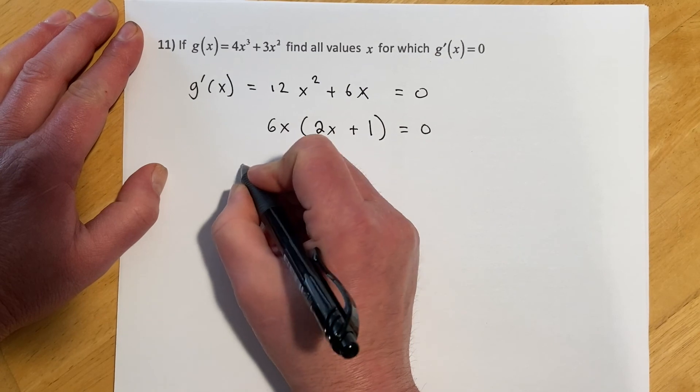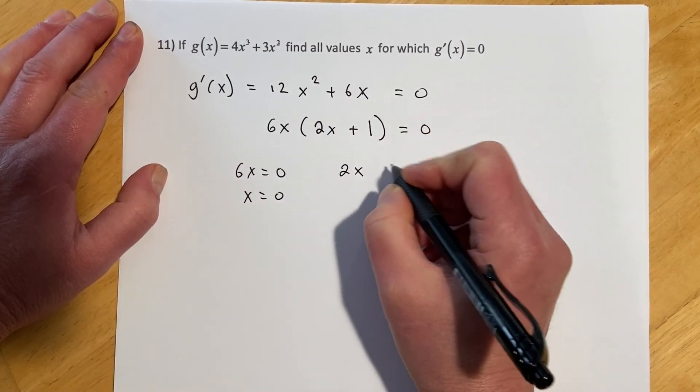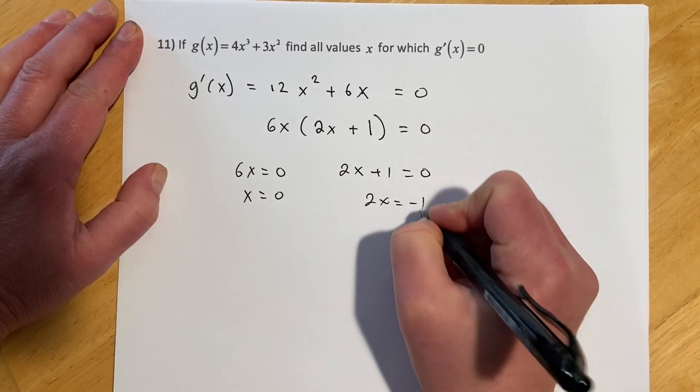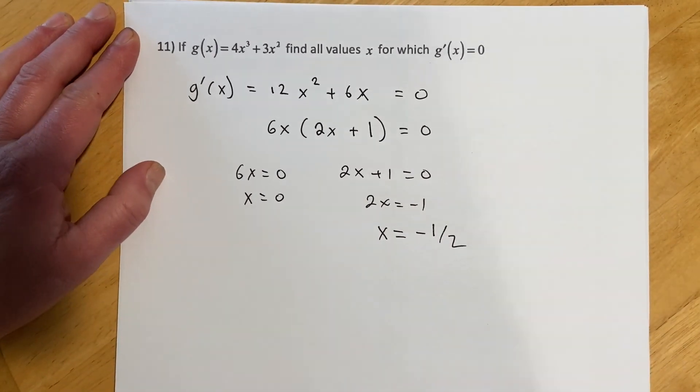And here we have 6x equals 0, so x equals 0. And for this branch, we've got 2x plus 1 equals 0. Bring my 1 over, 2x equals negative 1, and x equals negative 1 half.